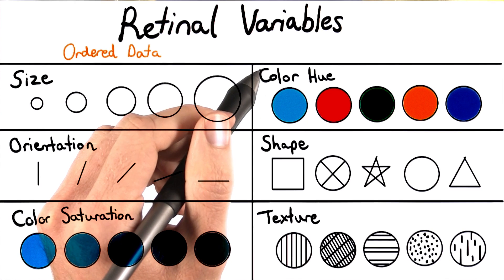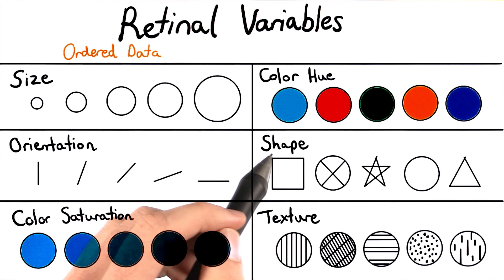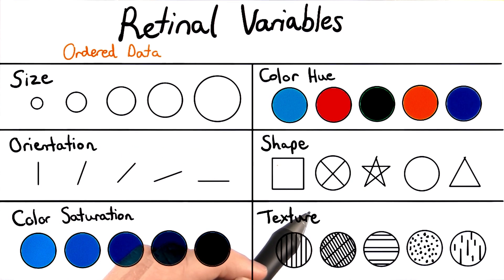These other retinal variables, such as color hue, shape, and texture, are great for encoding nominal variables.